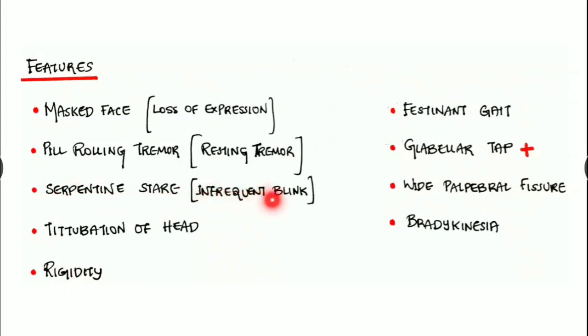There is serpentine stare due to infrequent blinking. We can notice titubation of head, and there comes the rigidity. Rigidity is a pathognomonic feature of extrapyramidal lesion. Festinating gait is a characteristic feature of Parkinsonism, and the glabellar tap is positive, which is known as the Myerson sign. There is wide palpable fissure, and as we have seen before, there is bradykinesia.